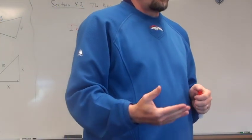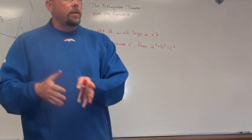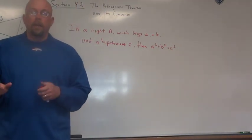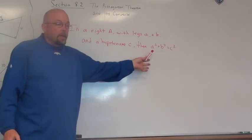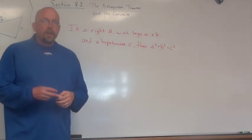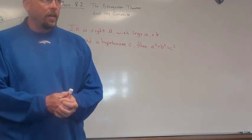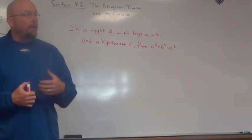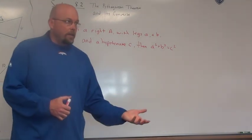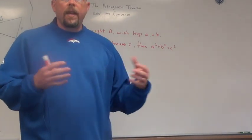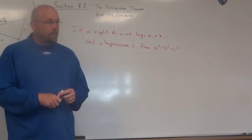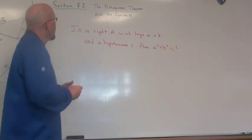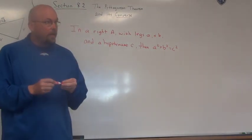We have said all along that the Pythagorean Theorem is just A squared plus B squared equals C squared, but that has not been technically right. The actual theorem says: if we have a right triangle that has legs A and B and a hypotenuse C, then we can use the formula. The theorem has to have an if-then statement — it can't just be a formula.